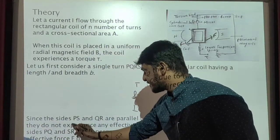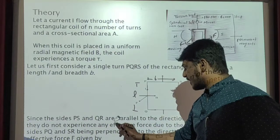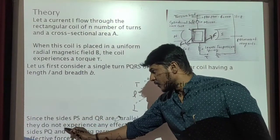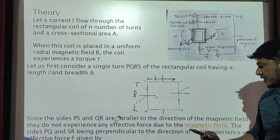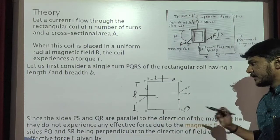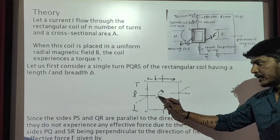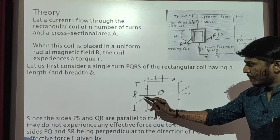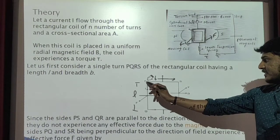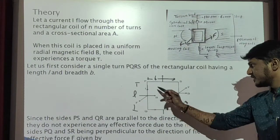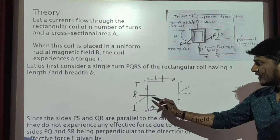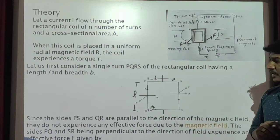Since the sides PS and QR are parallel to the direction of the magnetic field, they do not experience any effective force due to the magnetic field. PS and QR are parallel to the radial magnetic field, so they do not experience any force.